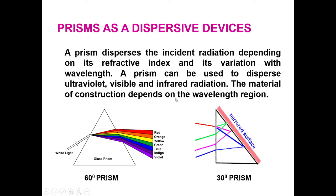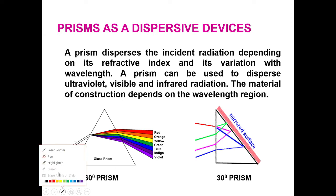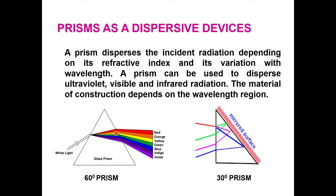The material of construction again depends upon the wavelength region. White light falls on one face of the prism and undergoes refraction. The separation will be better if the prism is large; if the prism is small, the wavelengths will be bunched together. As the distance between the two opposite sides increases, the wavelengths will be separated in a much better fashion.